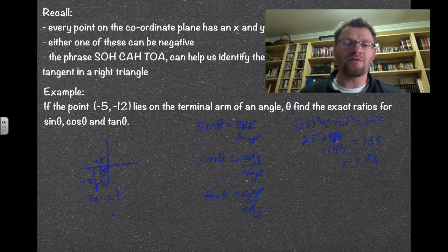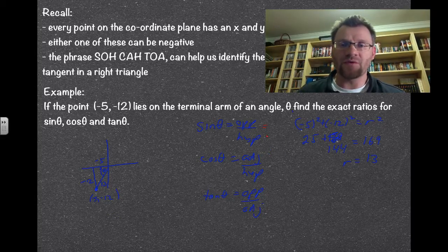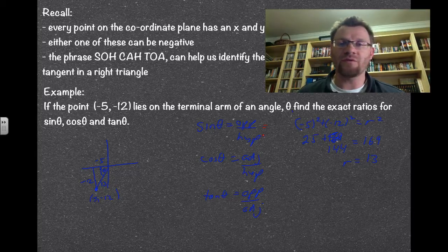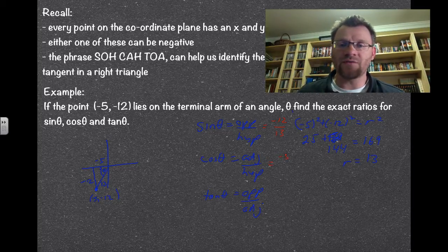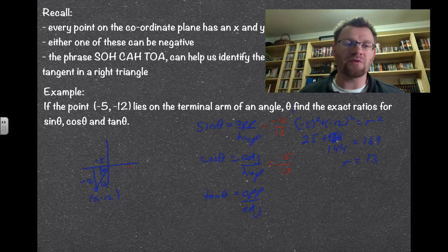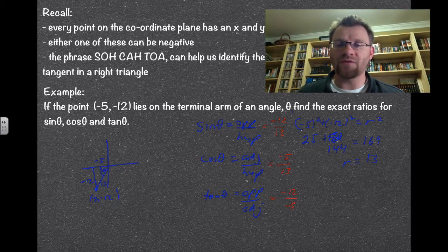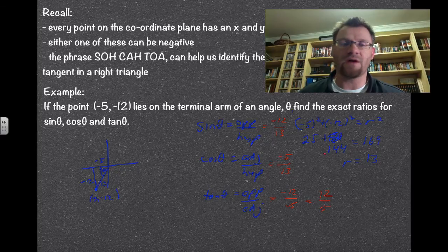Now we can find what sine of theta is. Sine of theta is opposite over hypotenuse, so that would be negative 12 over 13. Cosine is adjacent over hypotenuse, so that's negative 5 over 13. And tangent is opposite over adjacent, that's negative 12 over negative 5, which is just positive 12 over 5.